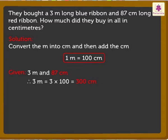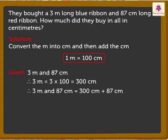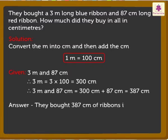Now, we have all the numbers in centimeters. So, let's add them. That is, 300 plus 87 is equal to 387 centimeters. Here, we found our answer. We bought 387 centimeters of ribbons in all.